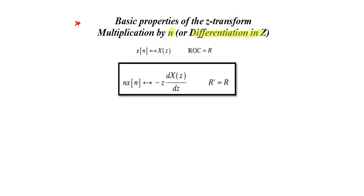If x[n] has Z-transform X(z) with ROC given by R, then for the signal n·x[n], the property states that this is equivalent to multiplying the differential of X(z) by minus z. So we need to differentiate X(z) with respect to z and multiply the result by minus z, giving minus z · d/dz of X(z). An important point is there is no change in the ROC — the ROC in both cases is R.